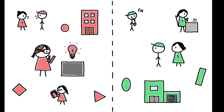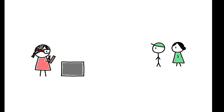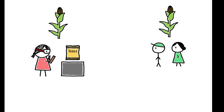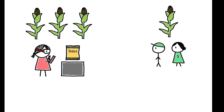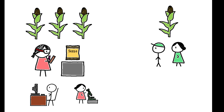This paper investigates the inappropriate technology hypothesis in the context of global agriculture. This is a setting with large and persistent productivity differences across countries, and R&D is dominated by a small set of biotech firms in rich countries.